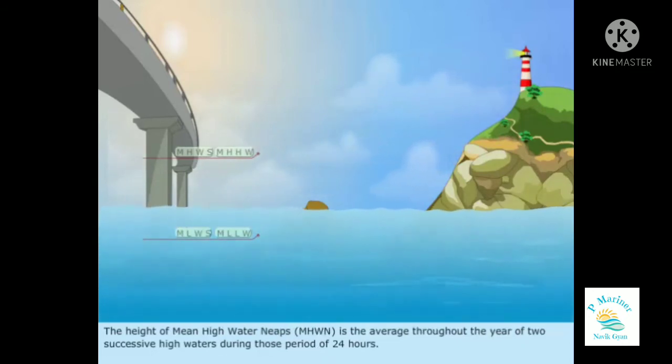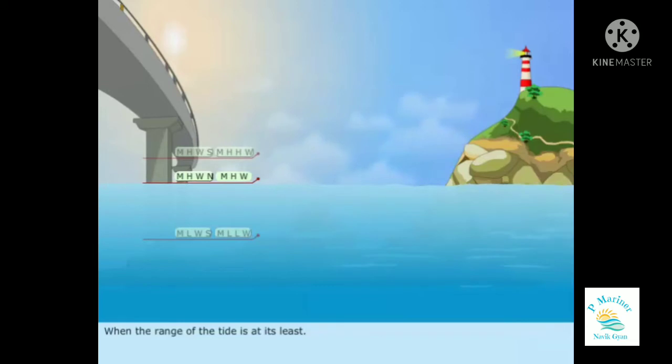The height of Mean High Water Neaps is the average throughout the year of two successive high waters during those period of 24 hours, when the range of the tide is at its least.